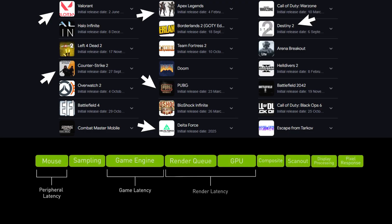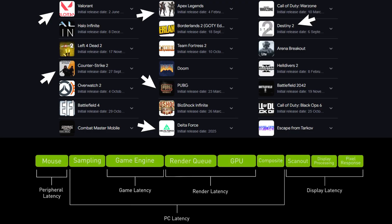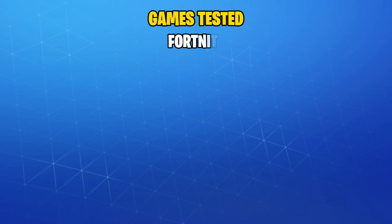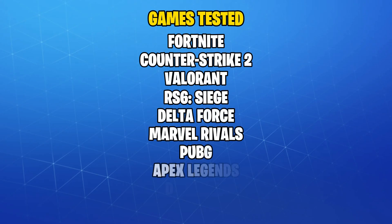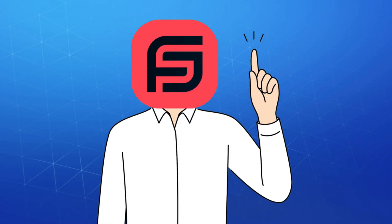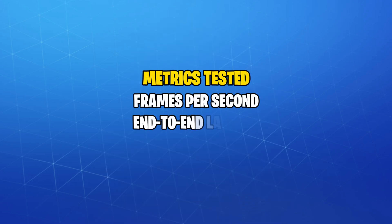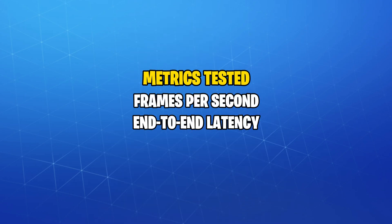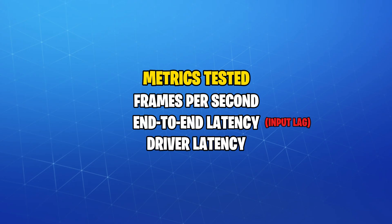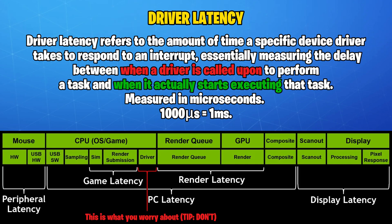We tested 10 of the most popular shooter games where latency really matters, including Fortnite, CS2, Valorant, and many more which will be shown on the screen now. The three metrics we tested were FPS, end-to-end latency — also known as input lag — and driver latency, which many people confuse with actual input lag and it doesn't matter as much as you might think.